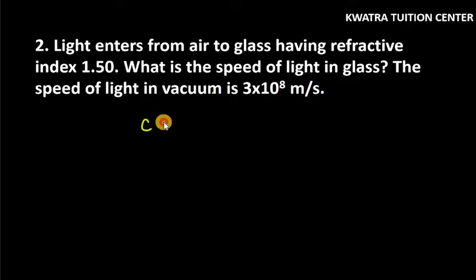First of all, you have given here c, that is 3×10^8 meters per second. Now, the refractive index formula is n equals c over v. Because here we have given n, refractive index given here, air to glass, that is 1.50.